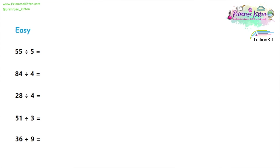For this, we are not going to use a column method — we are going to use a bus stop method. You write down the number you're dividing by first. So for the first question, 55 divided by five, we write down the five first. And then we write down the number we're dividing — the 55. This is called the bus stop method because in between these two parts there is something that vaguely looks like a bus stop, like this.